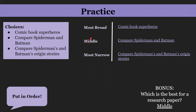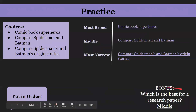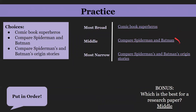The most broad is comic book heroes — there are a ton of different comic book heroes, so that's too broad. The middle is compare Spider-Man and Batman — those are two topics you could easily compare. The most narrow is compare Spider-Man's and Batman's origin stories, which is very specific to their origin stories. In my opinion, the best is either the middle or the most narrow. If you need a five-page paper, you might compare the two characters; if you only need a one-page paper, you might just compare their origin stories. It really depends on the type of paper you need. Comic book heroes would be more like a book.